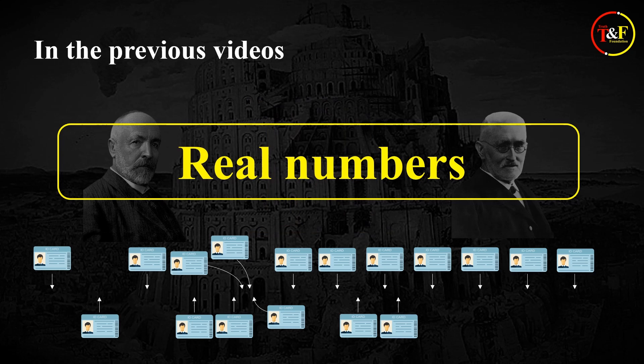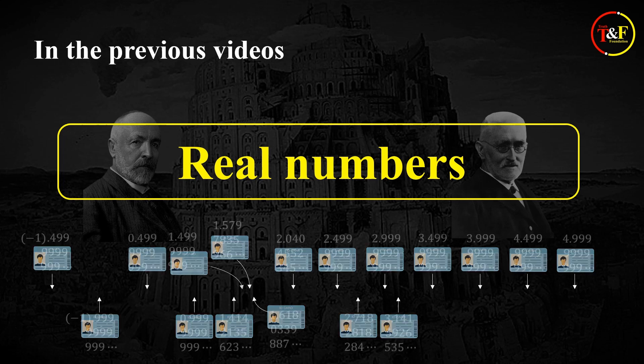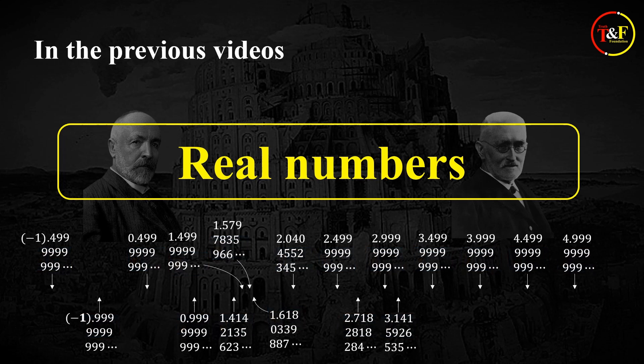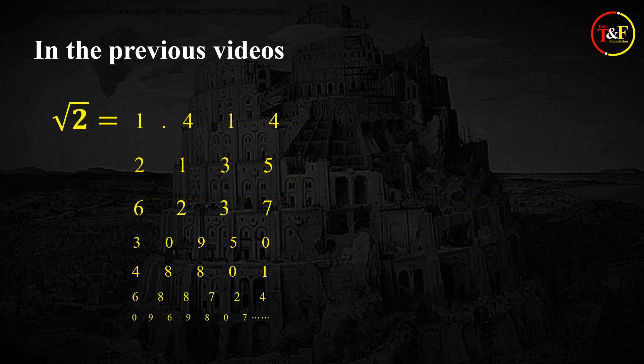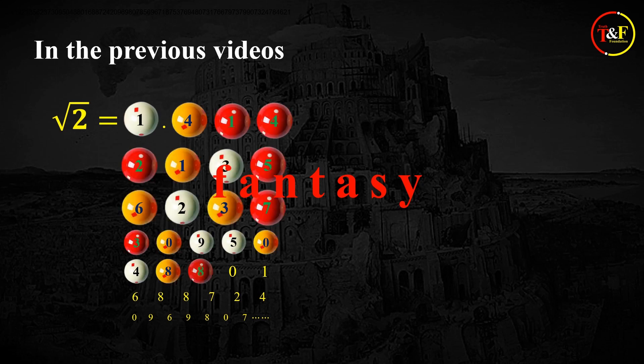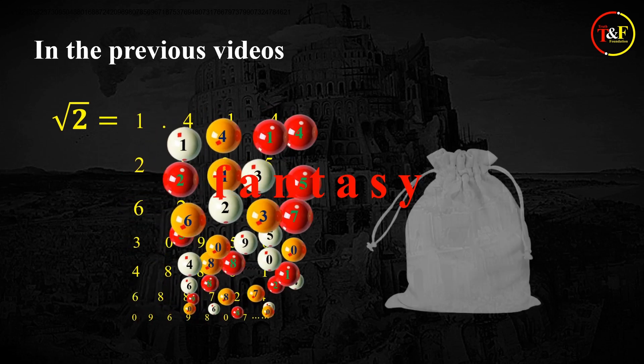According to the definition of the real numbers, each real number, whether it is a rational number or an irrational number, is defined as a collection of infinitely many entities, and one of the ways to express them, as you can see, is infinite decimal representations. However, a collection of infinitely many entities is a complete fantasy because it literally involves infinity, which has no counterpart in reality.